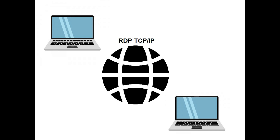Think of it as having a remote control for toys that's far away. RDP is a low-bandwidth protocol used to send mouse movements, keystrokes, and bitmap images on the screen on the server to the client computer. It always uses port 3389 and data is sent over TCP/IP.